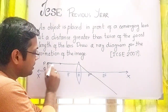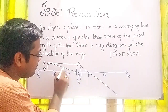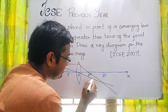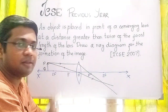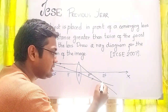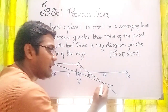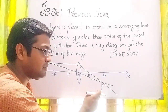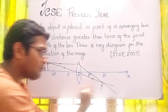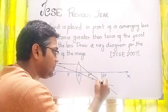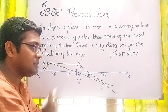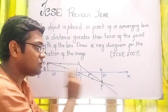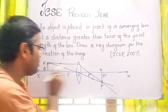Another ray coming from point P, passing through the optical center, after refraction shows no deviation — it follows the same initial path of the ray. These two refracted rays intersect each other at point small p. So, small p is the real image of capital P. If I draw a perpendicular from small p on the principal axis, it will intersect at point small q. So, small pq is the image of capital PQ.